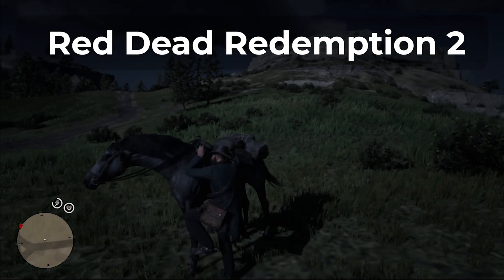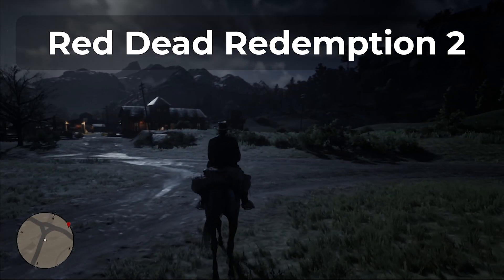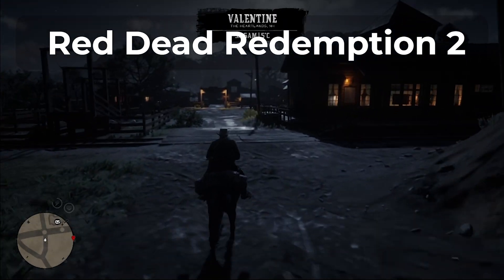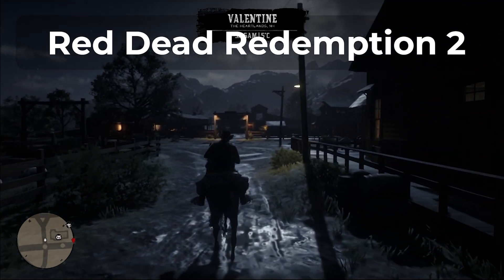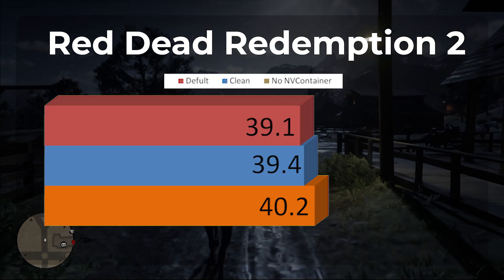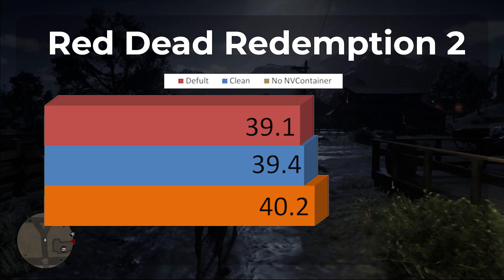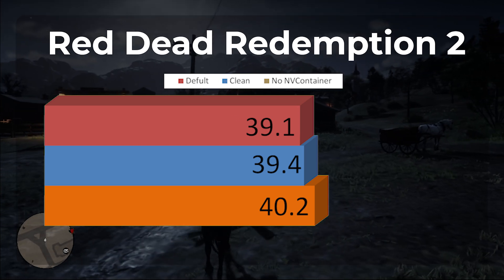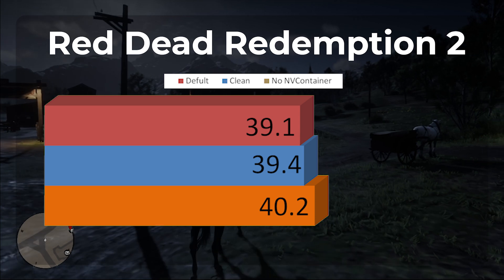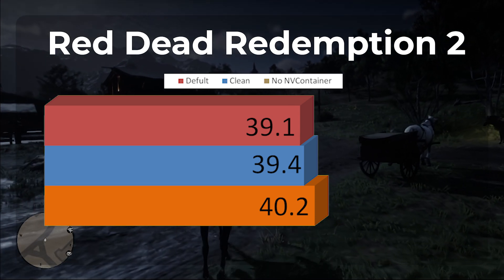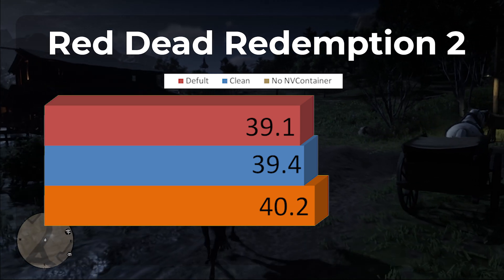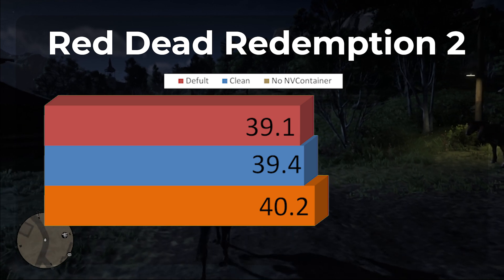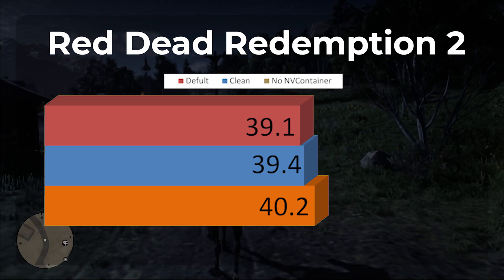The next game I'm looking at is Red Dead Redemption 2. I was hoping to at least see a little bit of benefit out of one of these games, but unfortunately it's not going to be this one either. We got pretty much the same performance all the way through the different configurations. With the default driver install we got 39.1 FPS, and with the clean driver install we got 39.4 FPS. We did get a slight little jump with the no NV Container install at 40.2, however it's less than 1 FPS.